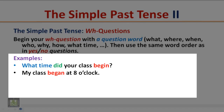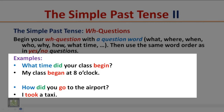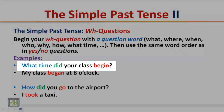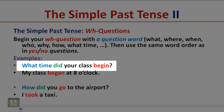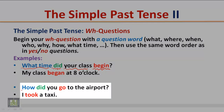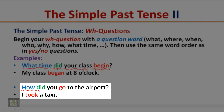Examples: What time did your class begin? My class began at 8 o'clock. How did you go to the airport? I took a taxi. Notice that the Wh-Question structure is: question word + did + subject + base form of the verb.